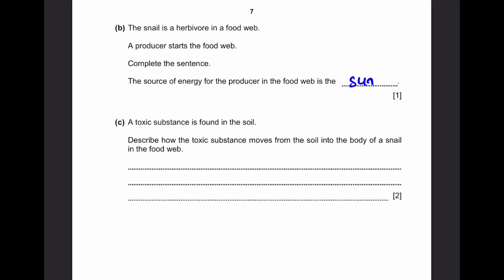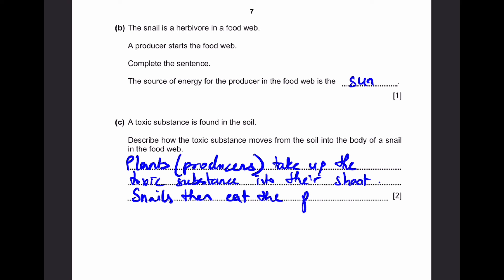Part C: A toxic substance is found in the soil. Describe how the toxic substance moves from the soil into the body of a snail in the food web. Firstly, plants or the producers take up the toxic substance into their shoot. The second part is because snails are herbivores as given in part B. The snails then eat the plants. Therefore, its energy and the toxic substance which is present in the plant moves to the snail. This is what we need to describe and this will be our answer.